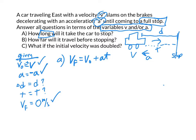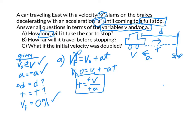Then you just do algebra. V final is zero, so we plug that in: zero equals vo plus negative a times t. Solving for t gives t equals vo over a, and since vo we're just calling v, that's t equals v over a — negative v over negative a, which is positive over positive. That's our answer. Look back and confirm it's in terms of v and a — and we're good.